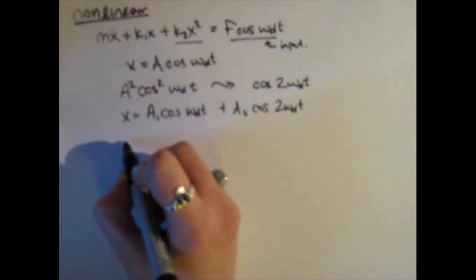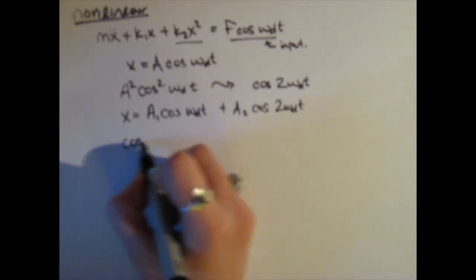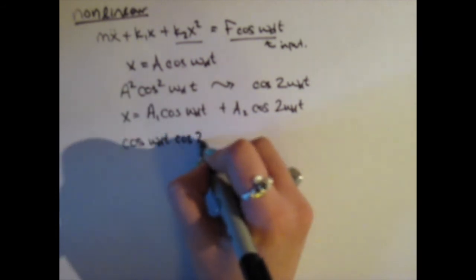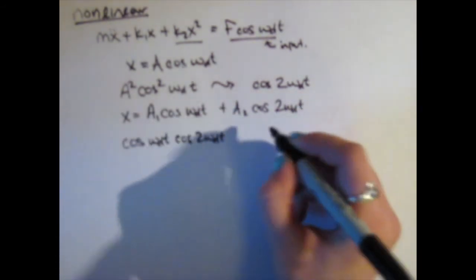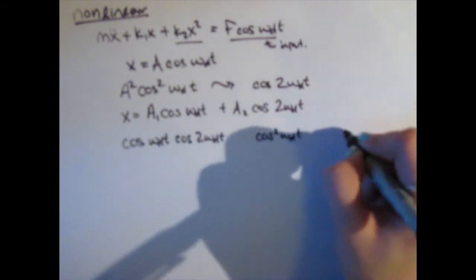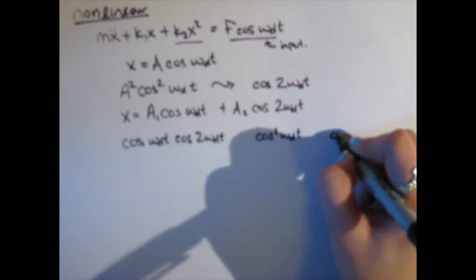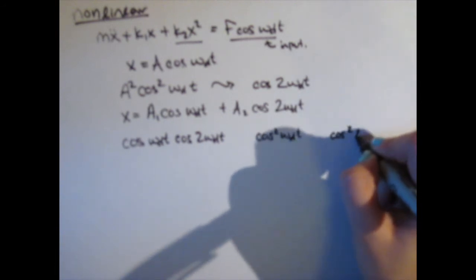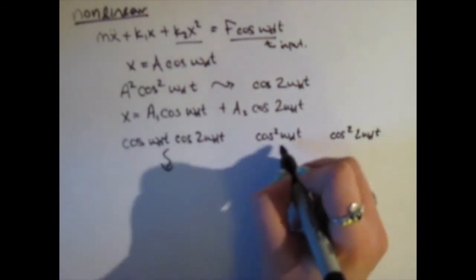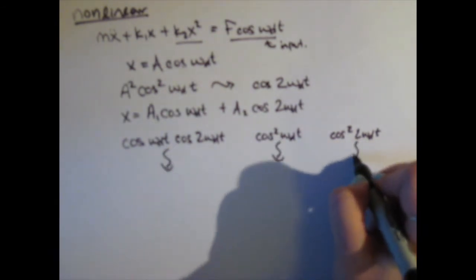Looking once again at the squared term, we get results like cosine 2 omega drive T, cosine squared omega drive T, and cosine squared 2 omega drive T. These all produce harmonics.